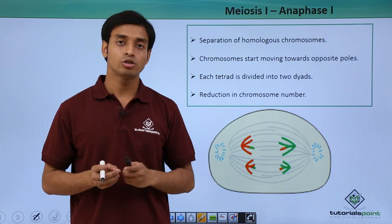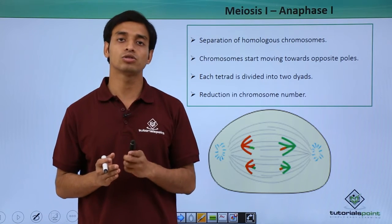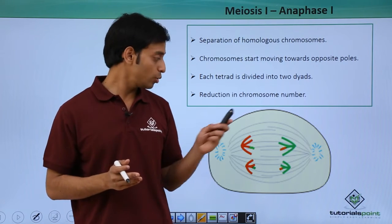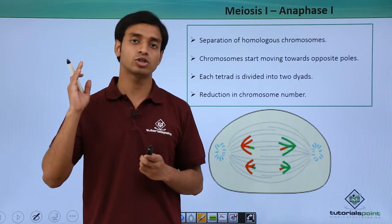So because of this separation what happens, the paternal chromosomes get onto one side and the maternal chromosomes get onto the other side. So the chromosomes get reduced in number. So initially if it was 2n, it gets n.